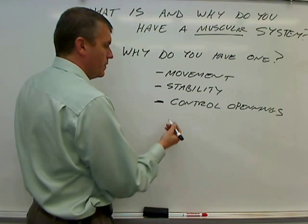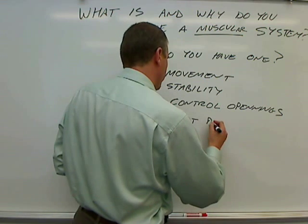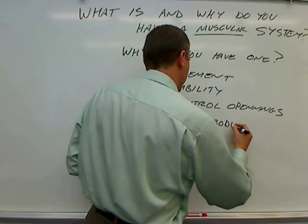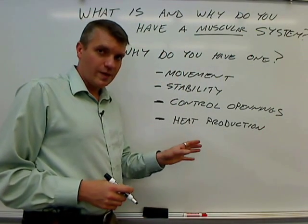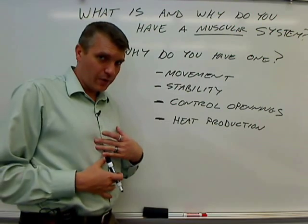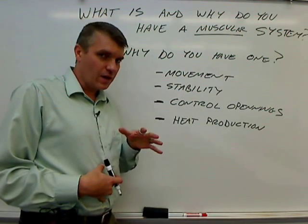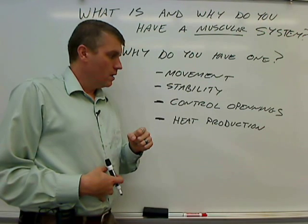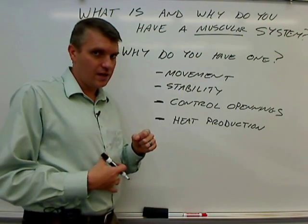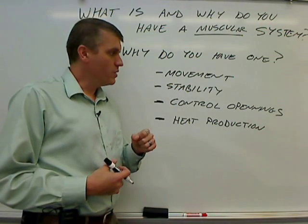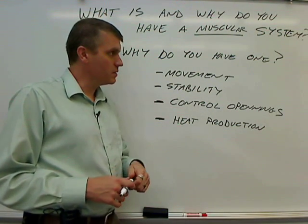The last reason is heat production. Humans are warm-blooded animals — we require a core temperature deep inside the body of around 100 degrees Fahrenheit. Since the air outside is usually cooler than that, we need a heat source to maintain that temperature, and that major heat source is the muscular system. So those are the four main reasons to have a muscular system.